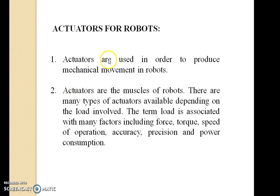The actuators are used in order to produce mechanical movement in robots — actuators are the muscles of robots. There are many types of actuators available depending on the load involved. The term load is associated with many factors including force, torque, speed of operation, accuracy, precision, and power consumption. Depending on what type of load we have, we can use different actuators for the motion control of the robot.